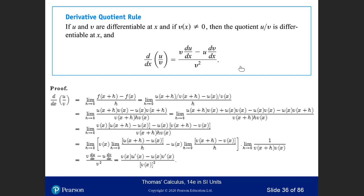Now let's look at the quotient rule. If u and v are differentiable at x, and if v(x) is not zero, then the quotient u/v is differentiable at x. The condition is that v(x) is not zero at the point where you take the derivative.